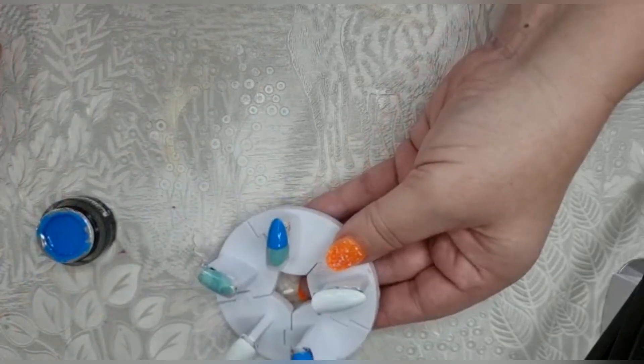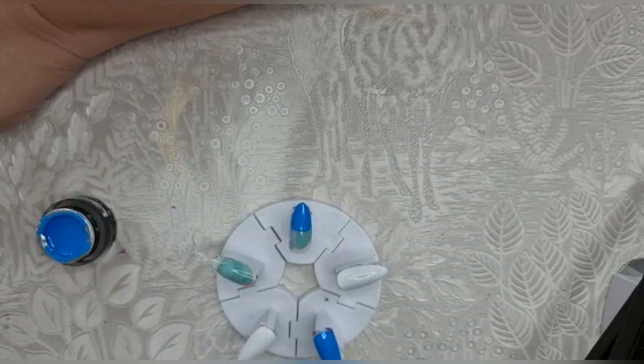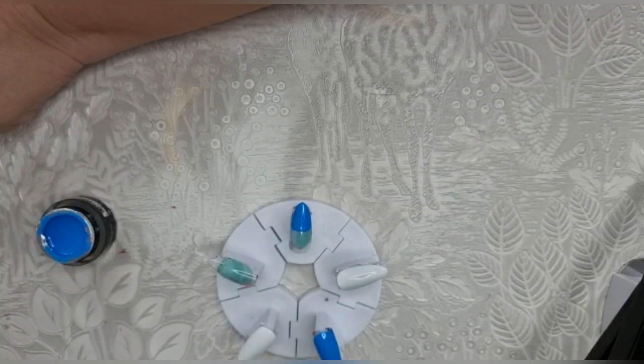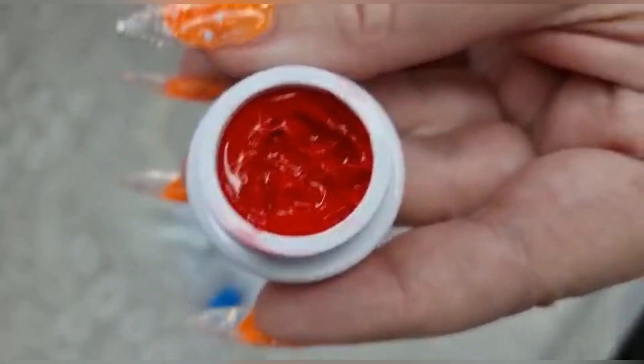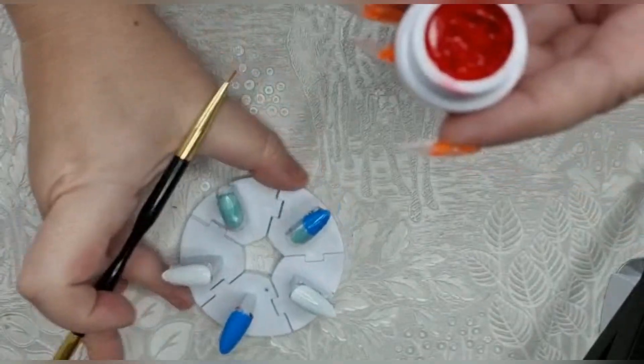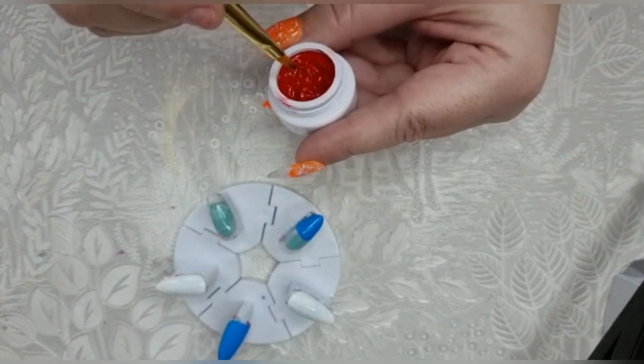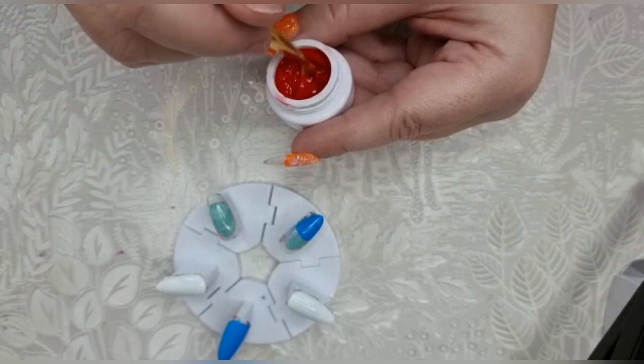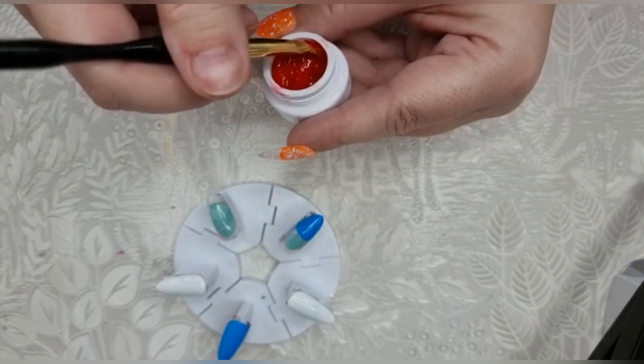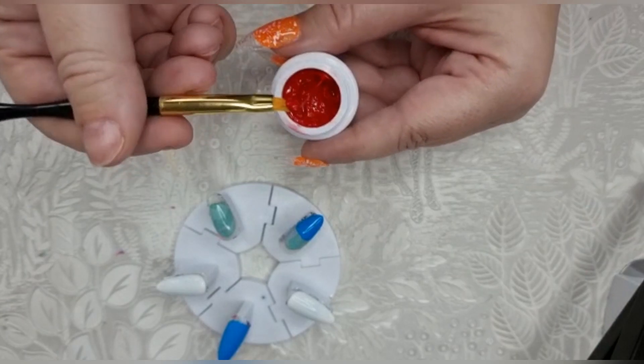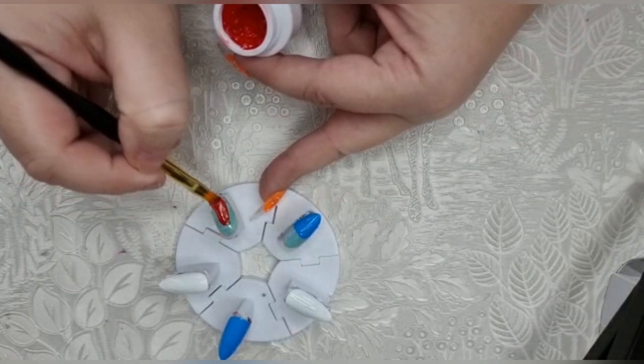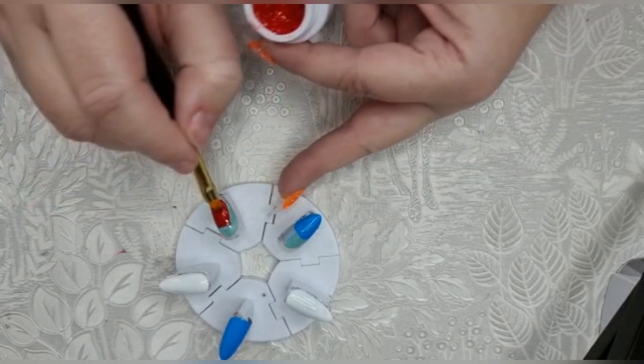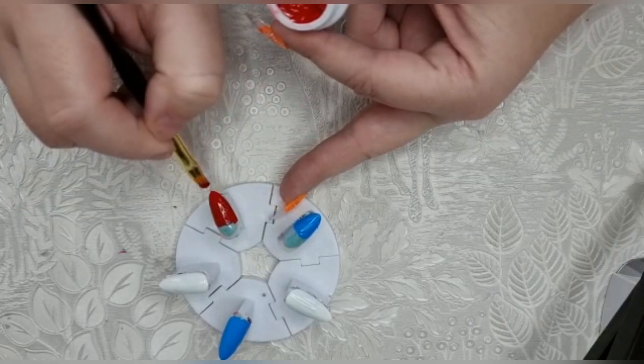And then this nail I'll do red. So I'll just wipe my brush and this is the red from Vetsy. As you can see it has been used, so if you go back in my videos you might find a demo or maybe I've done a full set with it. I'll just get a little bit here and do the full nail. Gorgeous.